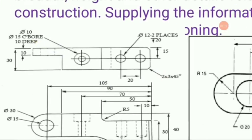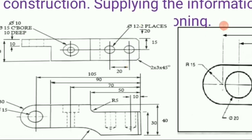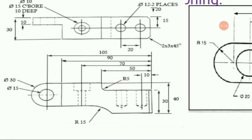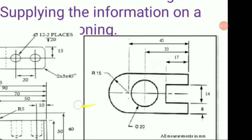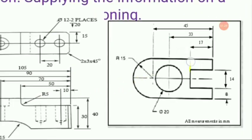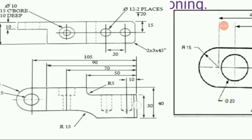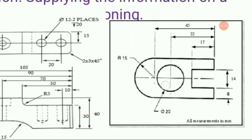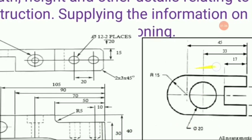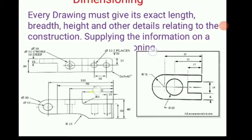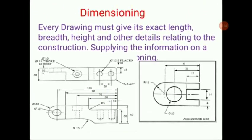These inclined lines are known as leader lines, which we will learn in later slides. You can also see different dimensions given in a parallel manner. In later classes, we will learn the different types of systems of dimensioning. The significance of dimensioning is that you can easily learn the exact length, breadth, height, and other details relating to a particular drawing or construction.